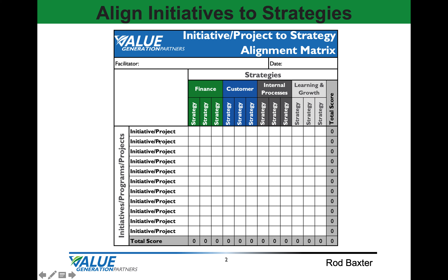We'll then correlate or align each initiative and project with each strategic goal and objective. We'll give it a numerical strength score of 1 for low and 5 for high, entering a score of 1 through 5 for each initiative or project relative to each strategic goal and objective.